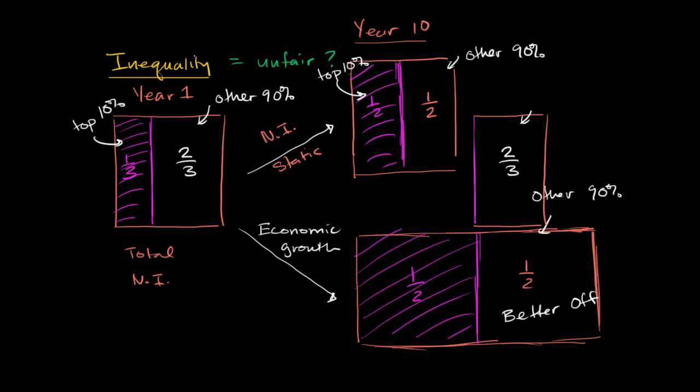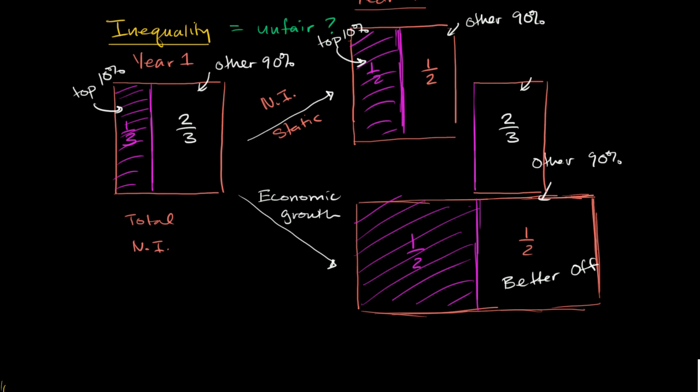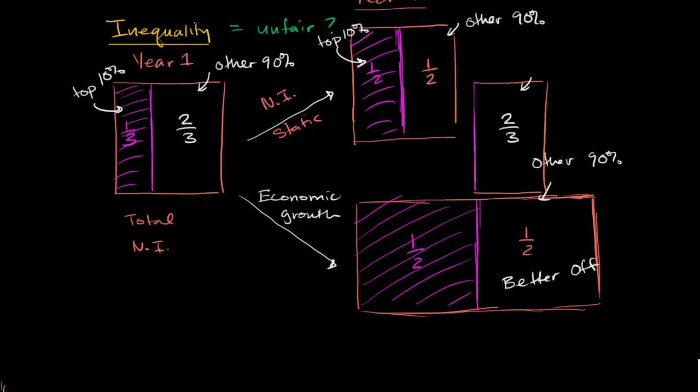That leads to one of the fundamental questions, especially when you're thinking about economic systems. You have this market system, this capitalist system, this market economy, and at least in recent history, it's shown us that this leads to growth, wealth creation, economic growth, but it also leads to inequality. Inequality is an inevitable byproduct.